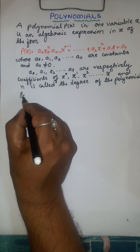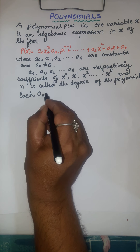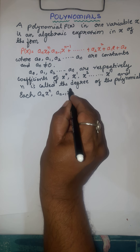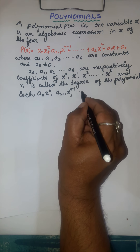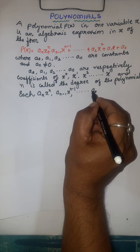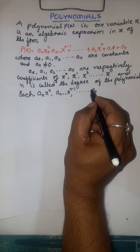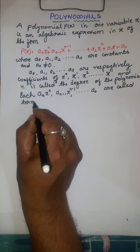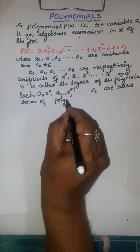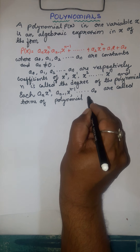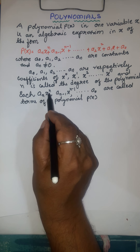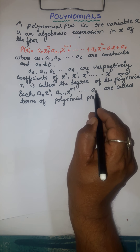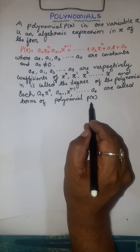Each term of the polynomial — a_n x to the power of n, a_(n-1) x to the power of n minus 1, dot dot dot, a_0 — are called the terms of polynomial P of x.